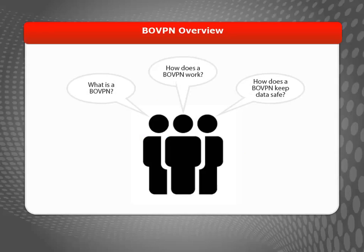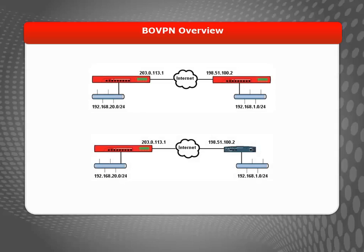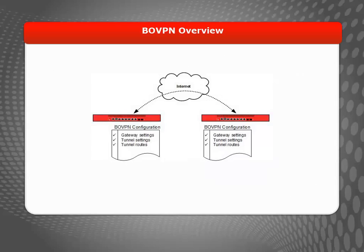A Branch Office VPN, or BOVPN, is an IPsec VPN tunnel between two Firebox devices, or between a Firebox and a third-party VPN endpoint. It creates a secure connection between computers or networks in different locations. Each connection is called a tunnel, and all data sent through the tunnel is encrypted so it can be safely sent over a public network. The key to success when you create a BOVPN tunnel is to make sure that the configurations match on the two VPN endpoints of your tunnel.